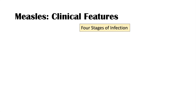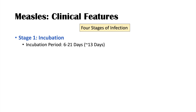There are four stages of infection of measles. Stage one is the incubation stage. The virus incubates in our body, and this incubation period lasts for six to 21 days, with a median time of around 13 days. During this stage, individuals are often asymptomatic, although some may have mild symptoms such as an onset of fever or other prodromal symptoms.